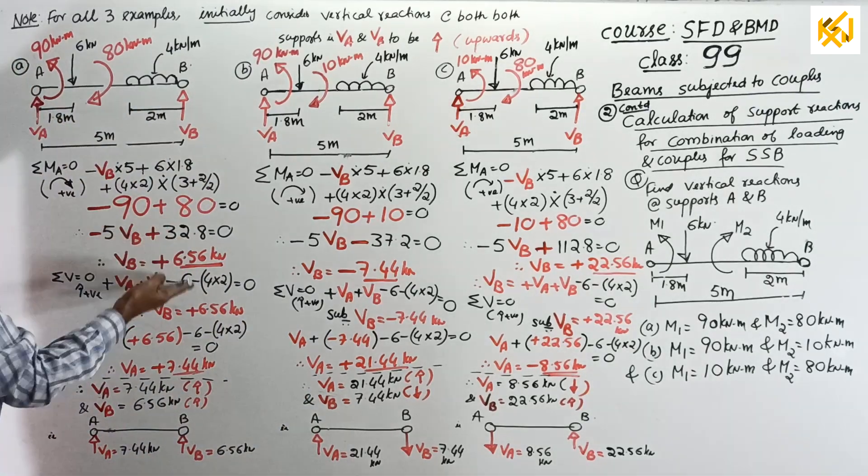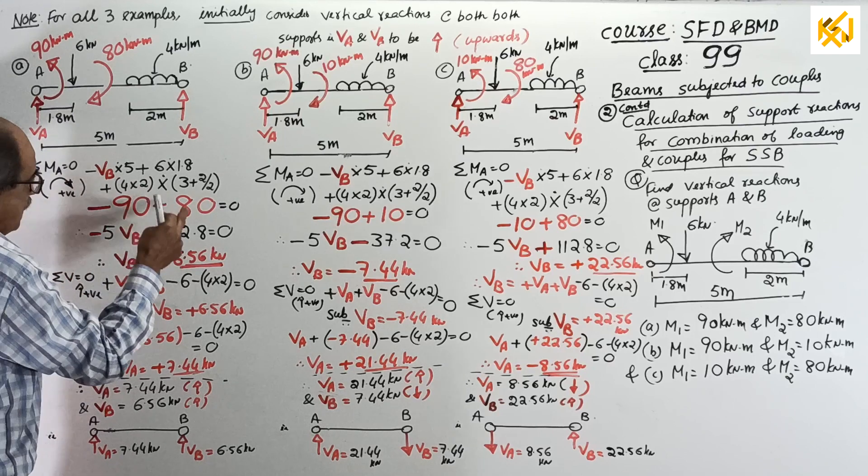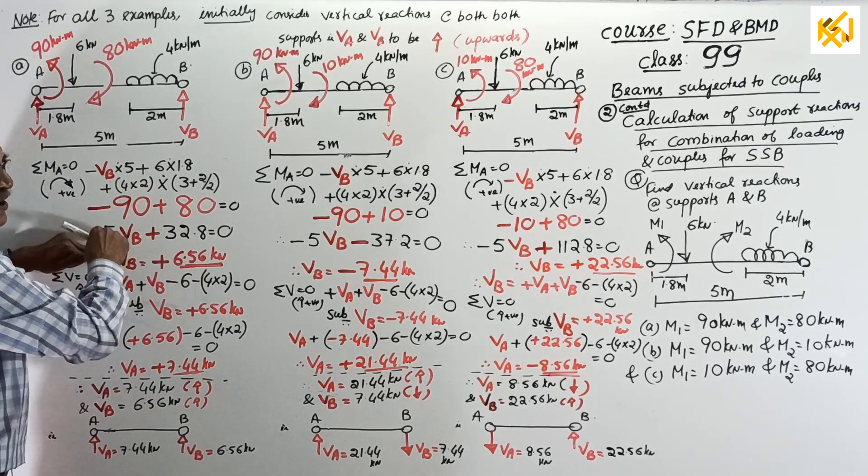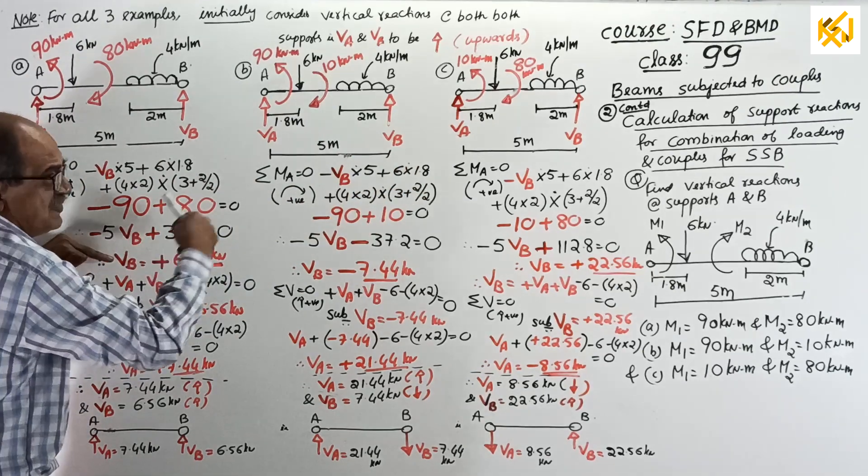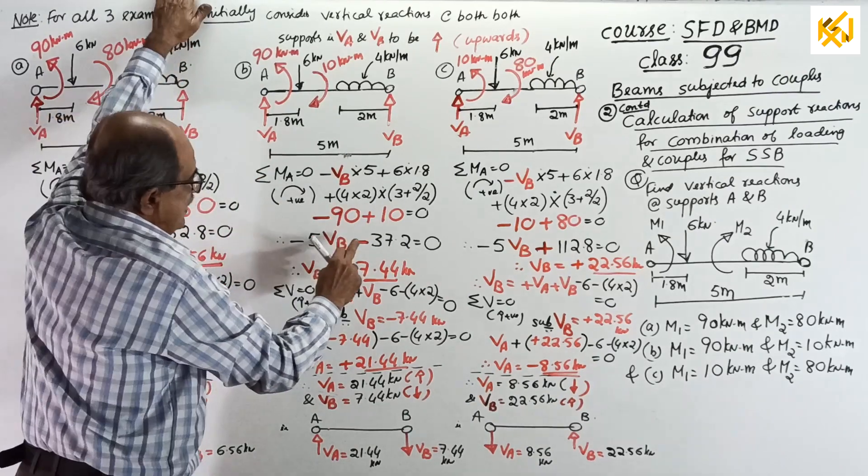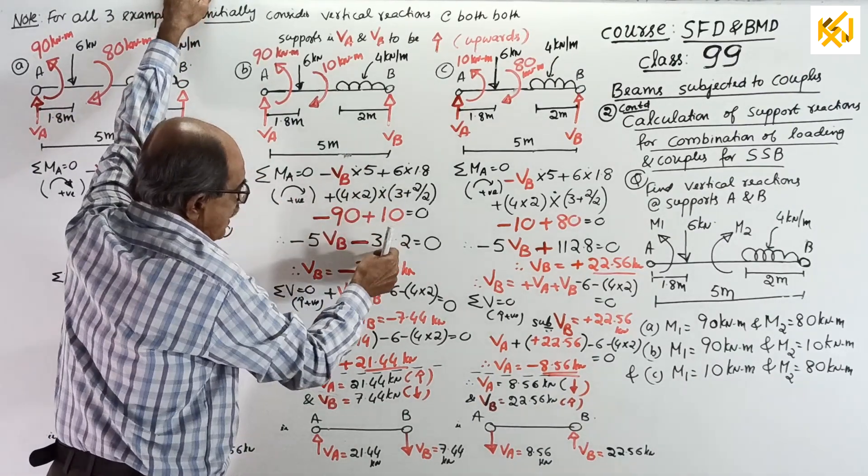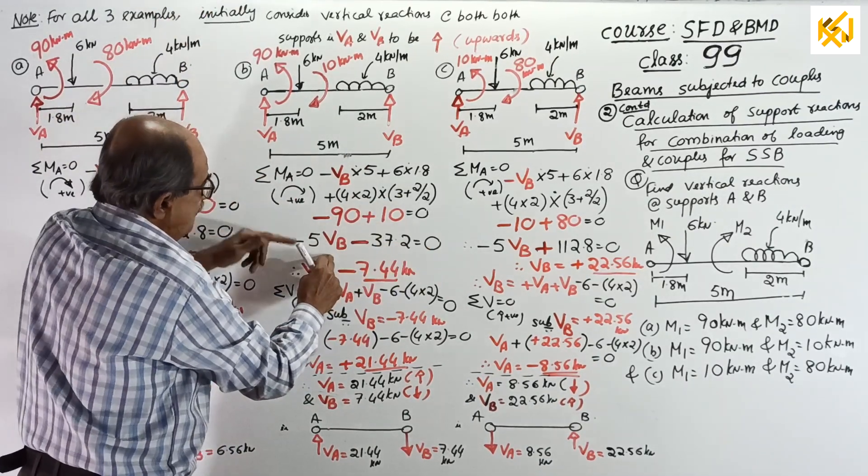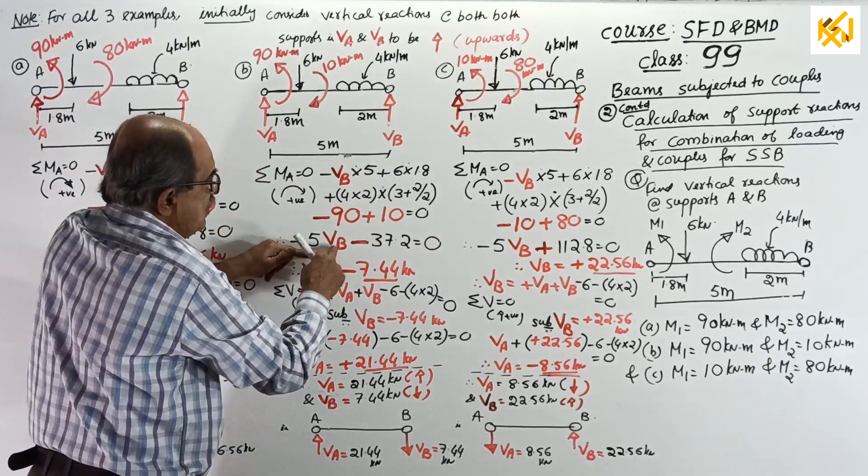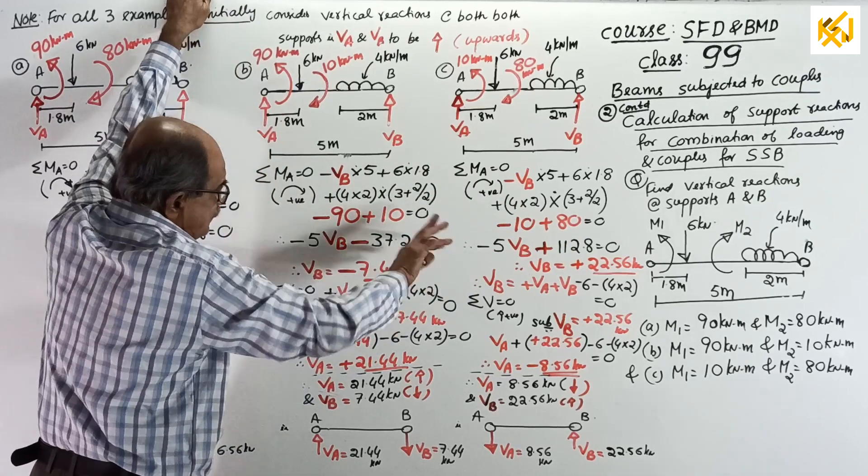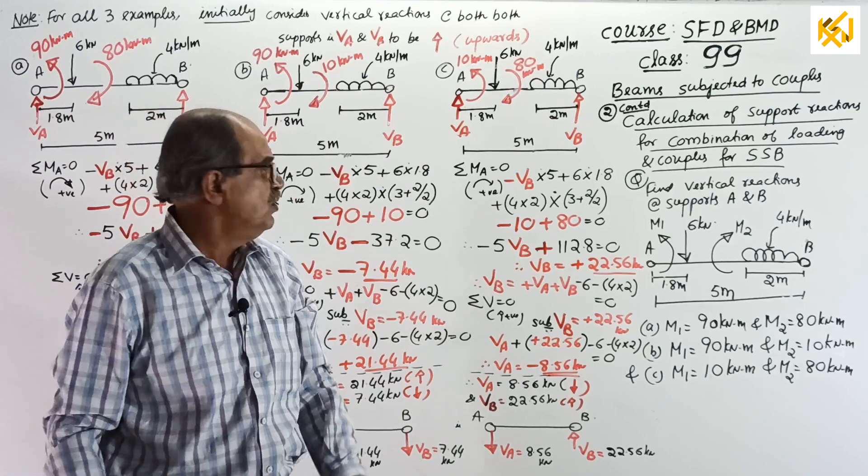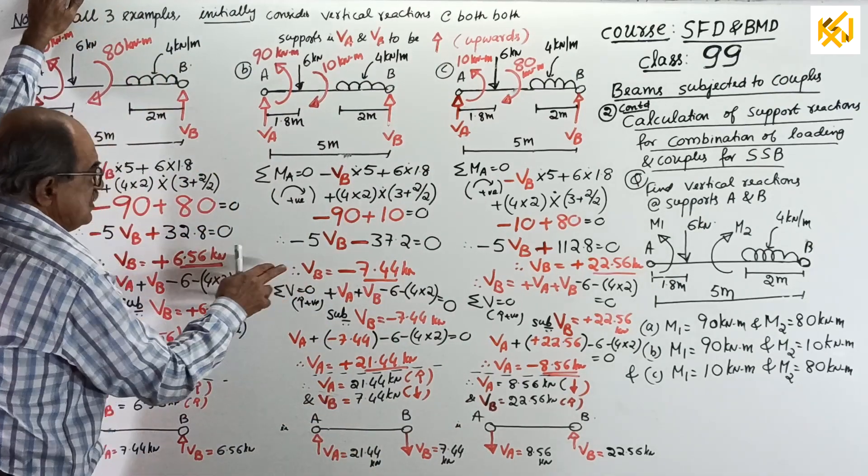Therefore, actually, this much I don't write usually. See, minus 5VB, plus 32.8, equal to 0. VB equal to, this minus 5VB, you can take that side, or you can take this one, that side, becomes 32.8 by 5, positive will come. Here, see, minus 5VB, minus 37.2, equal to 0. Or, if you maintain, as it is here, minus 5VB, equal to, plus 37.2, VB, equal to, plus 37.2, minus 5, negative will come. Here, positive will come. High school level mathematics. Okay. So, all three questions, we got VB.